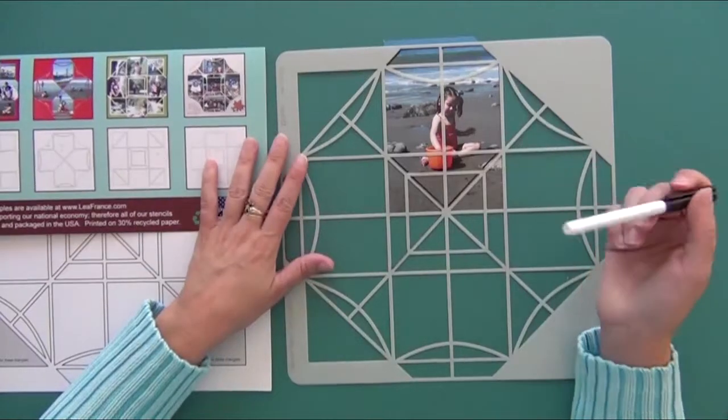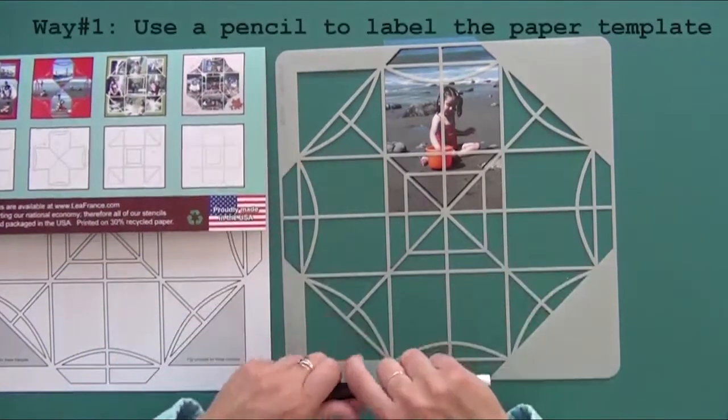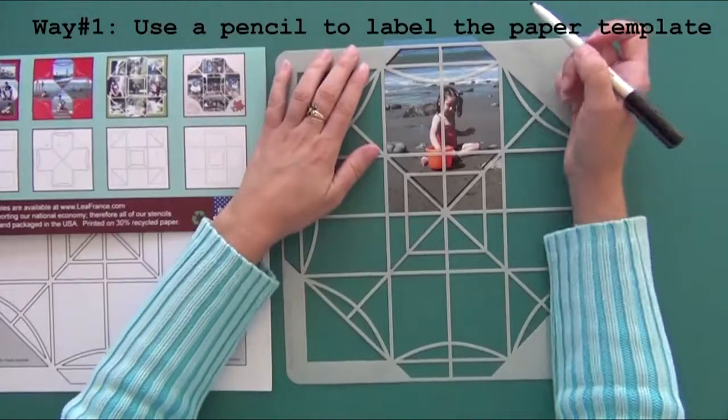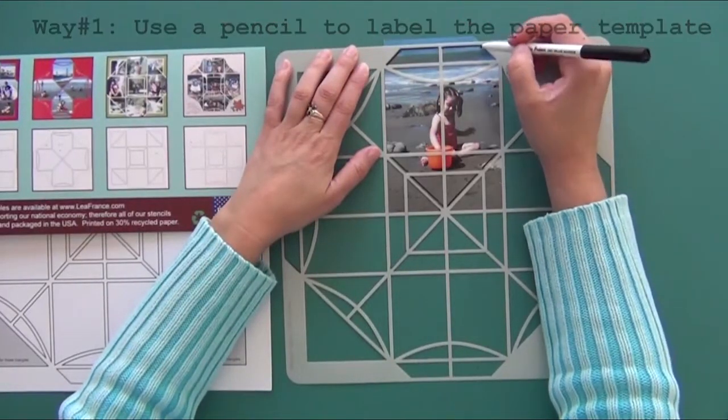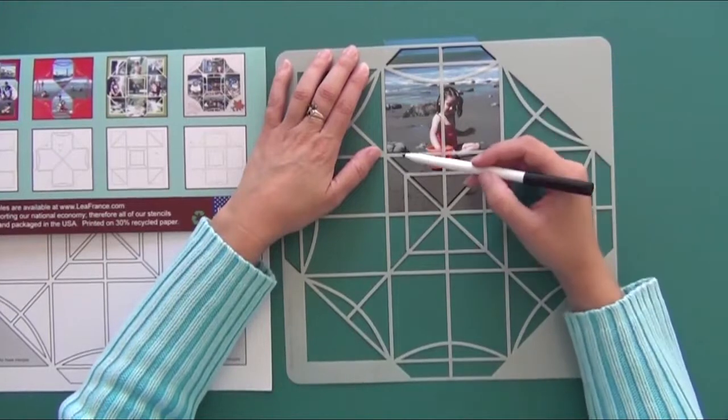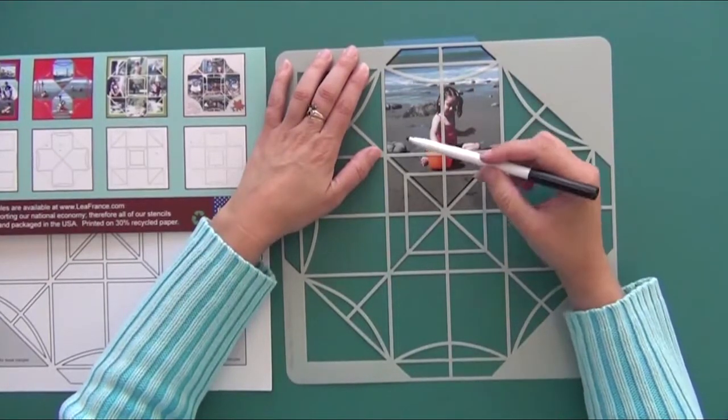Let's start with the first way of building your layout. You trace on your photo using the inside line of the template. As you can see here,